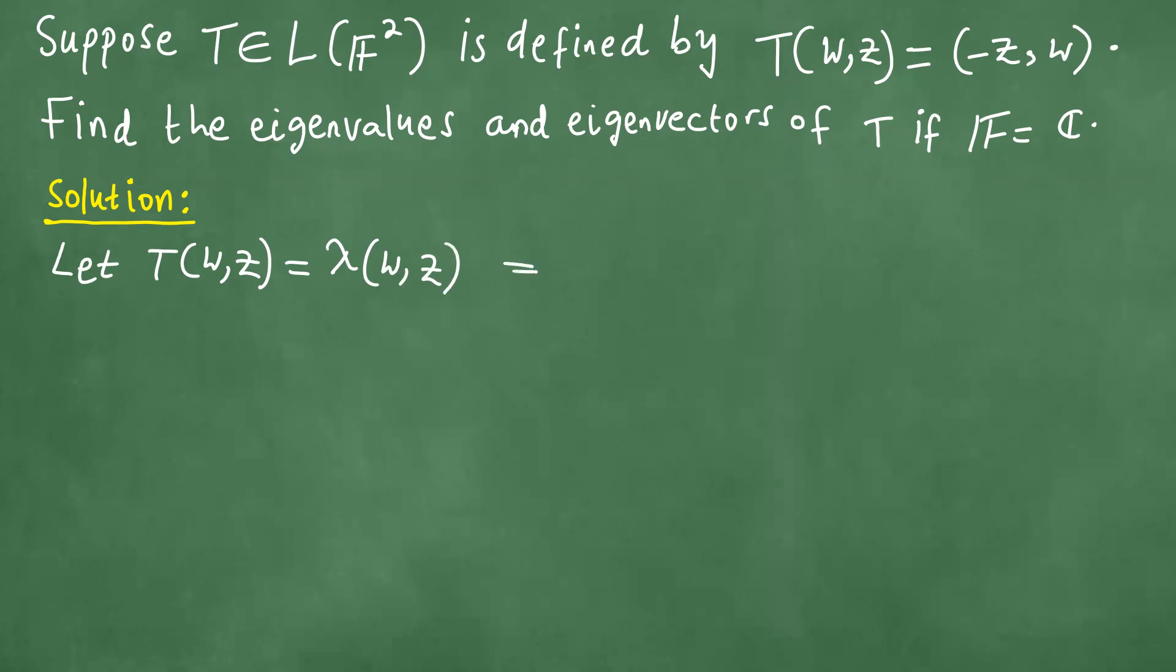So what is the meaning of this? We remember that T is (-z,w), so here we put (-z,w), which equals λ(w,z).